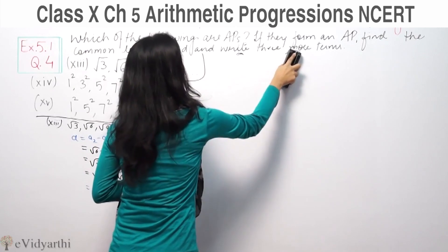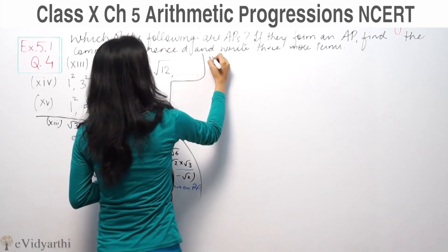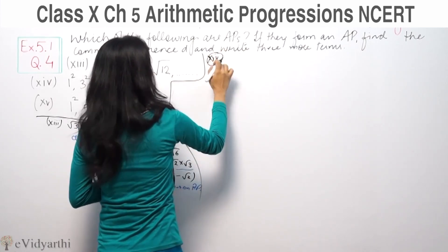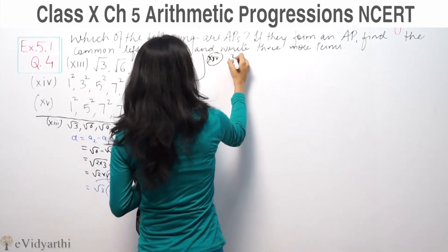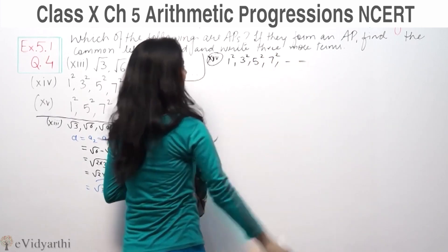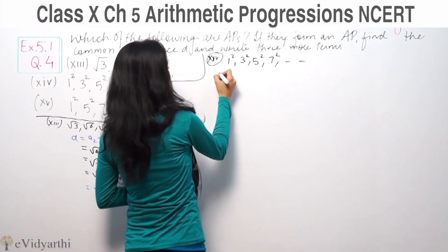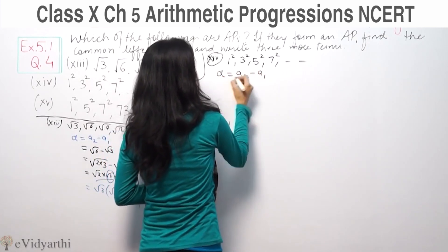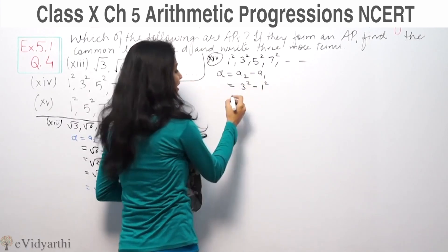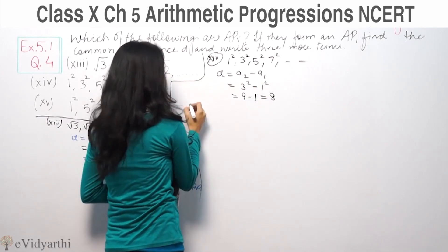Let's do another part, part number 14. We have 1 square, 3 square, 5 square, 7 square. Again, check the common difference. D equals A2 minus A1. Second term is 3 square minus 1 square. 3 square is 9, 1 square is 1. So we get 8.